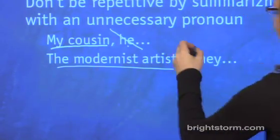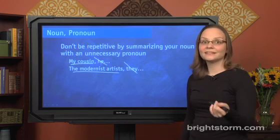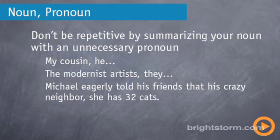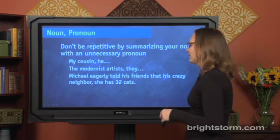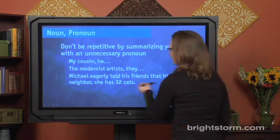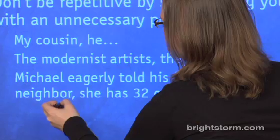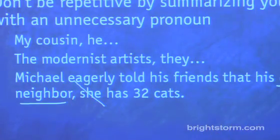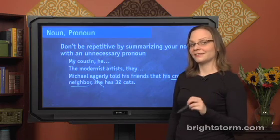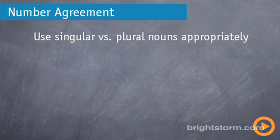Let's see what that looks like in a sentence: "Michael told his friends that his crazy neighbor, she has 32 cats." Very simply — we already know we're talking about the crazy neighbor, so we don't want to repeat that noun with the pronoun "she." Not good on the SAT.